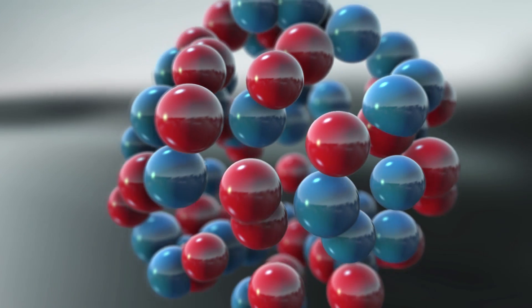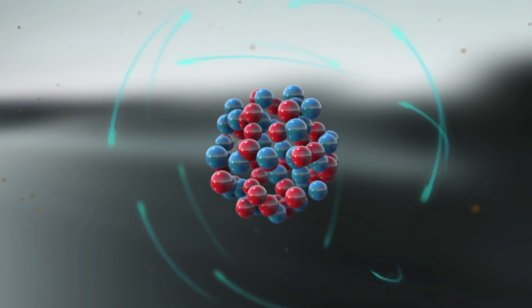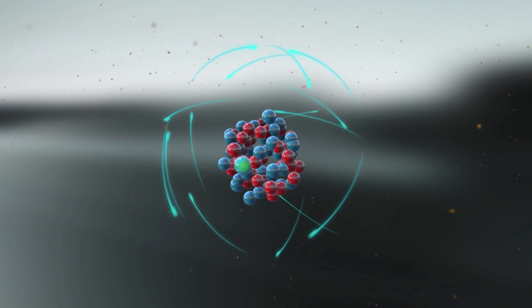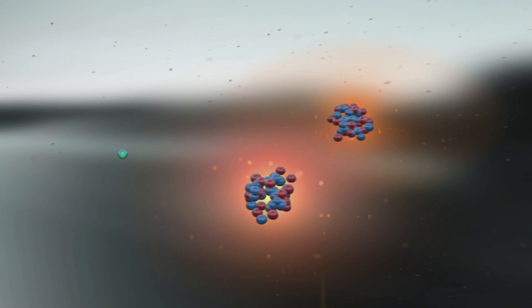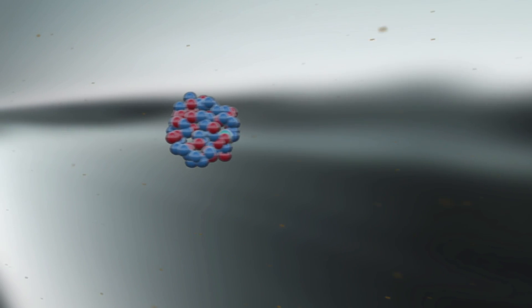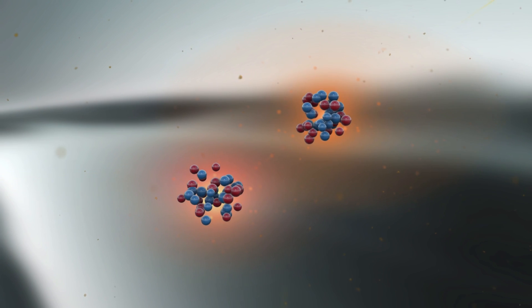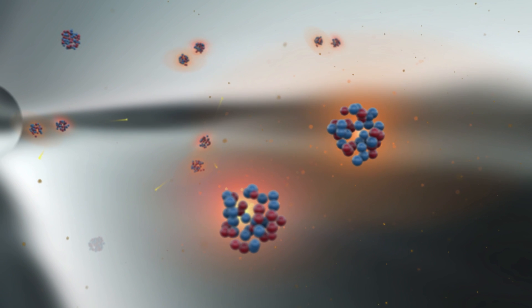Nuclear energy is energy that is stored in the nucleus or center of an atom. In order to use this energy, it has to be released from the atom. The process of splitting the atoms is called fission, and that creates heat and radiation.